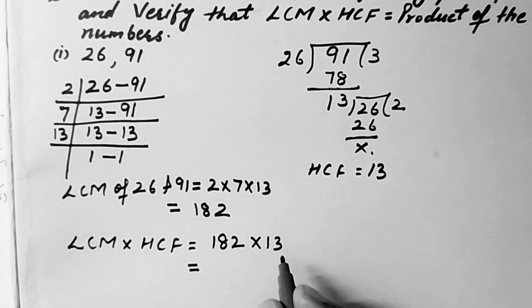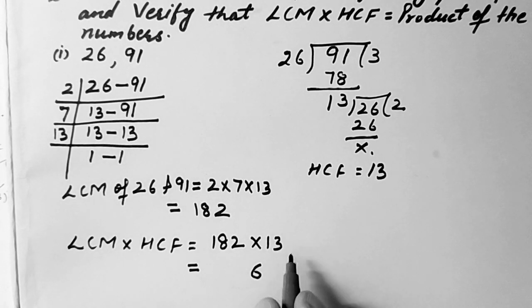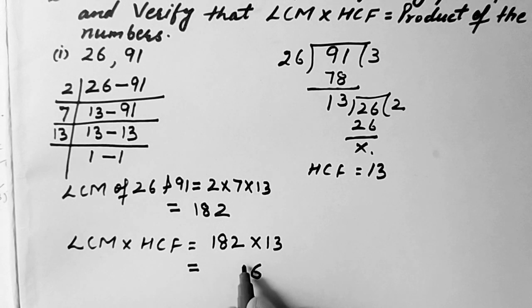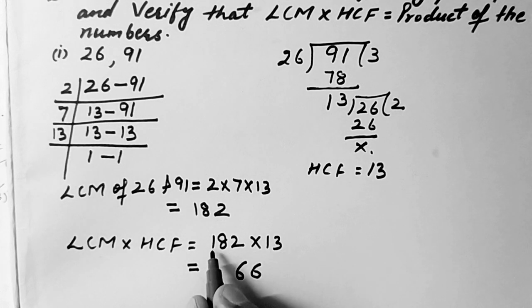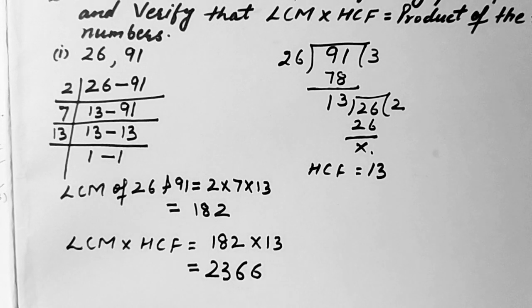So we can multiply like this way. 13 twos are 26, 6 here, 2 as carry. 13 eights are 104 plus 2 is 106. So 6 here and 10 as carry. 13 ones are 13, 13 and 10 is 23. So this is coming their product.